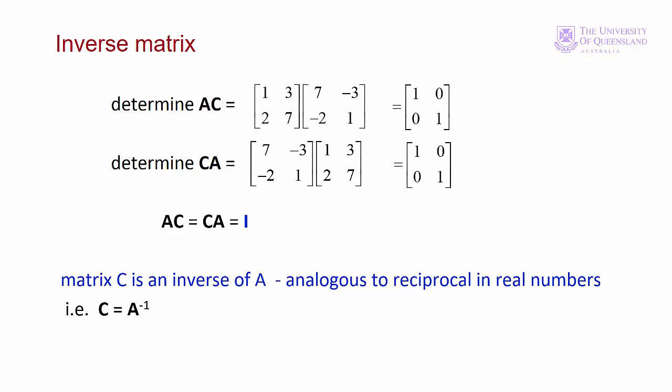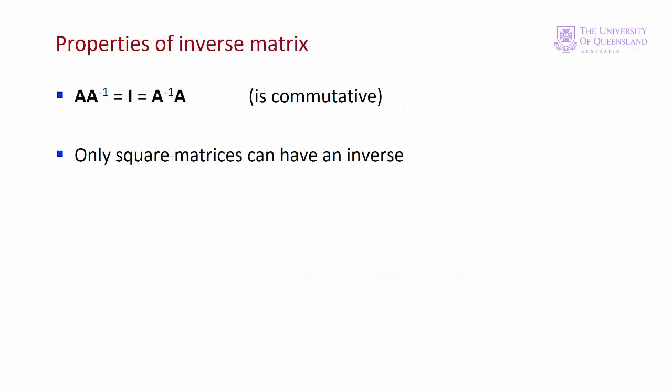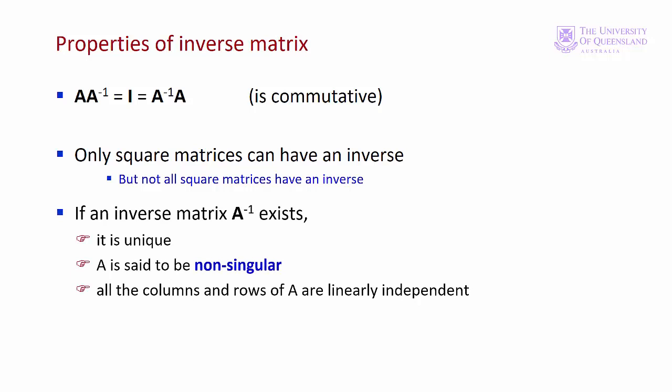Other properties of matrices: only square matrices have an inverse — that is a necessary but not sufficient condition, since not all square matrices have an inverse. If a matrix does have an inverse then it is unique, and the matrix is said to be non-singular. The other necessary condition for an inverse to exist is that all rows and columns are linearly independent, meaning no elementary row operations can convert a row or column into a series of zeros.